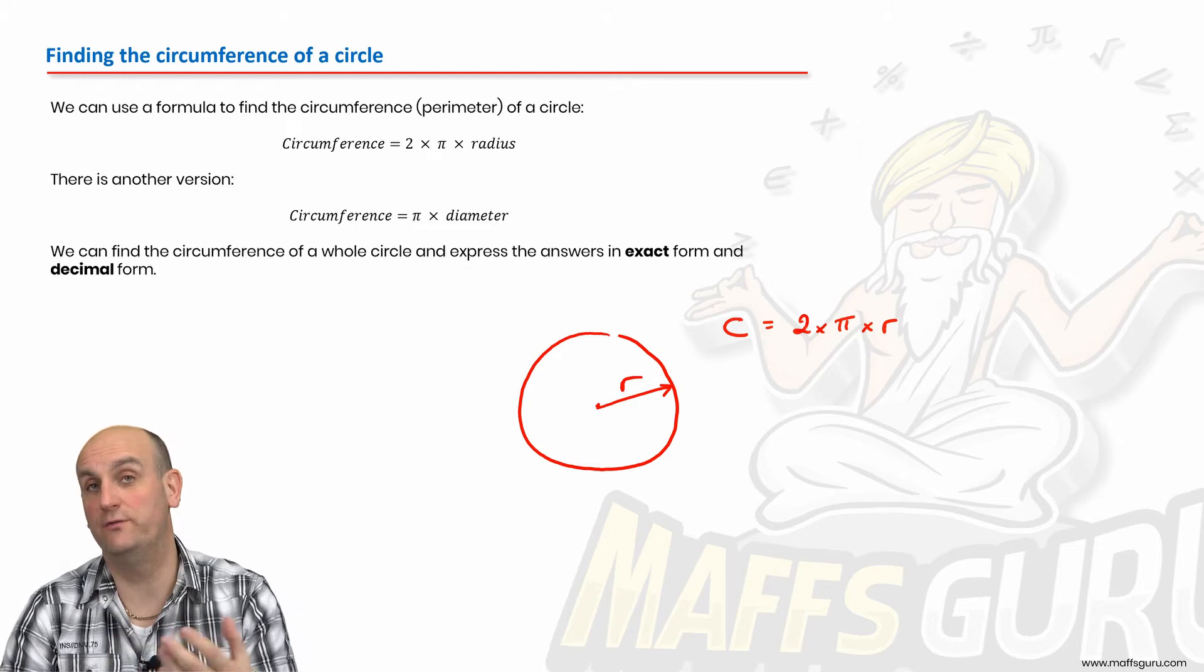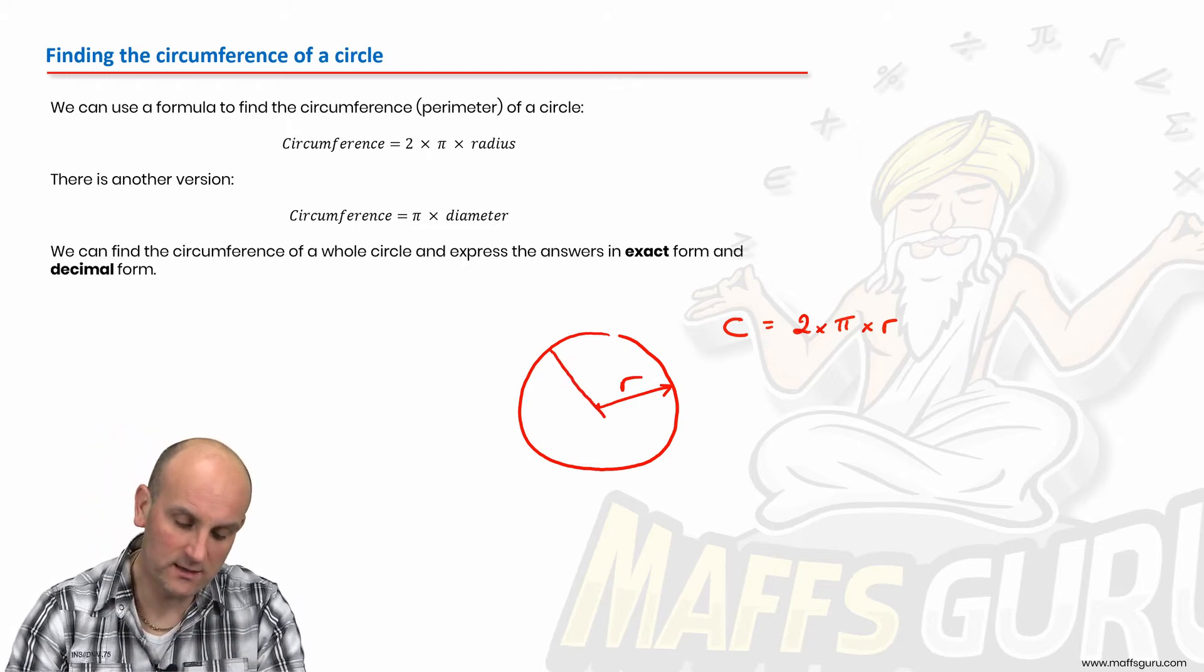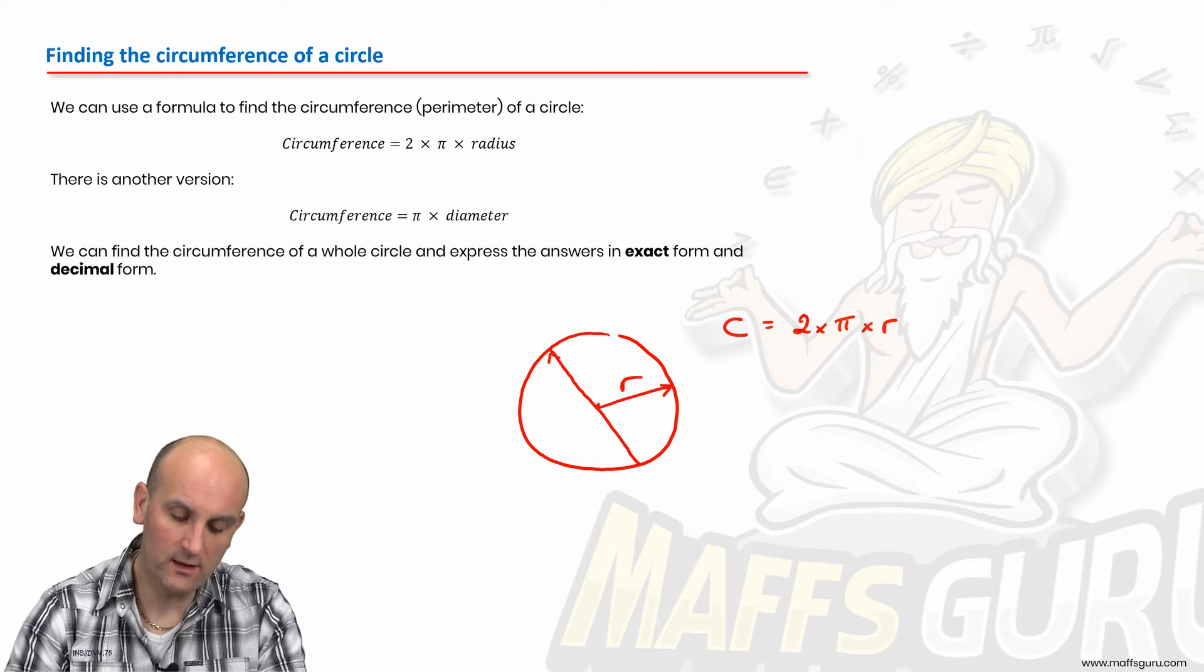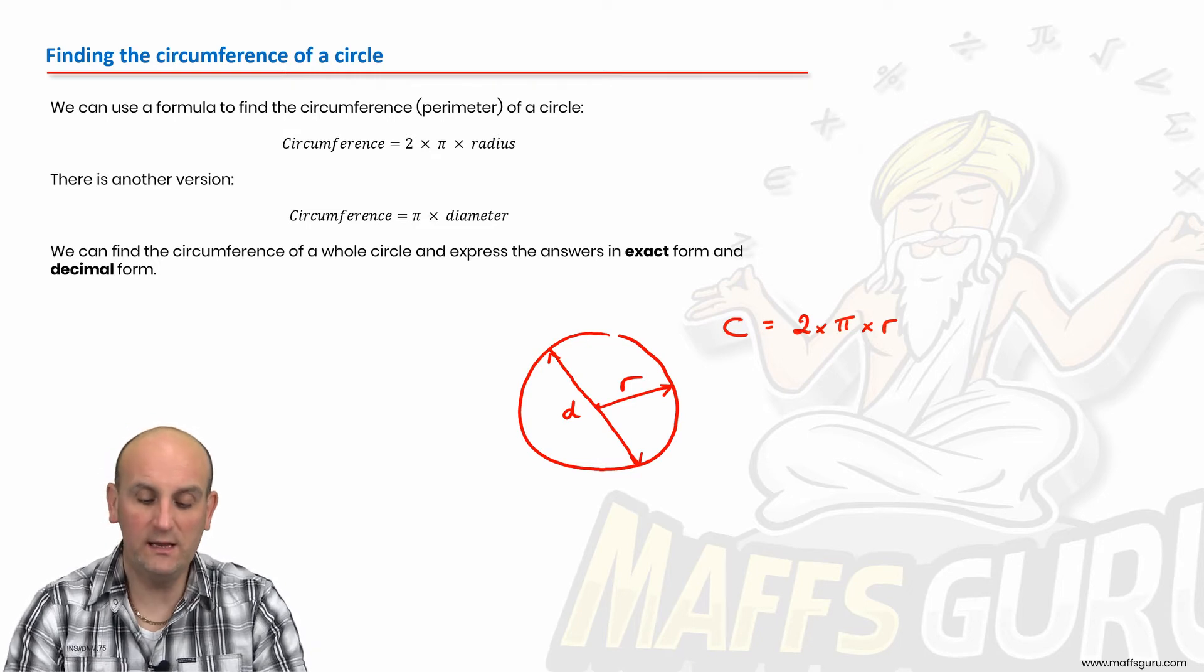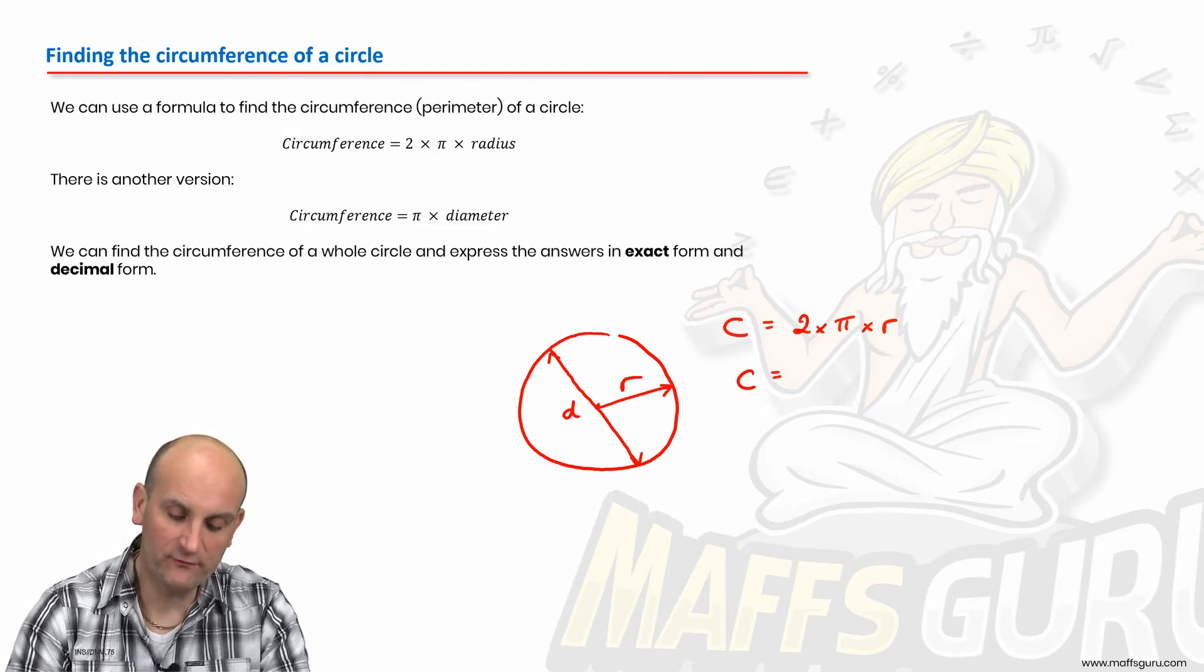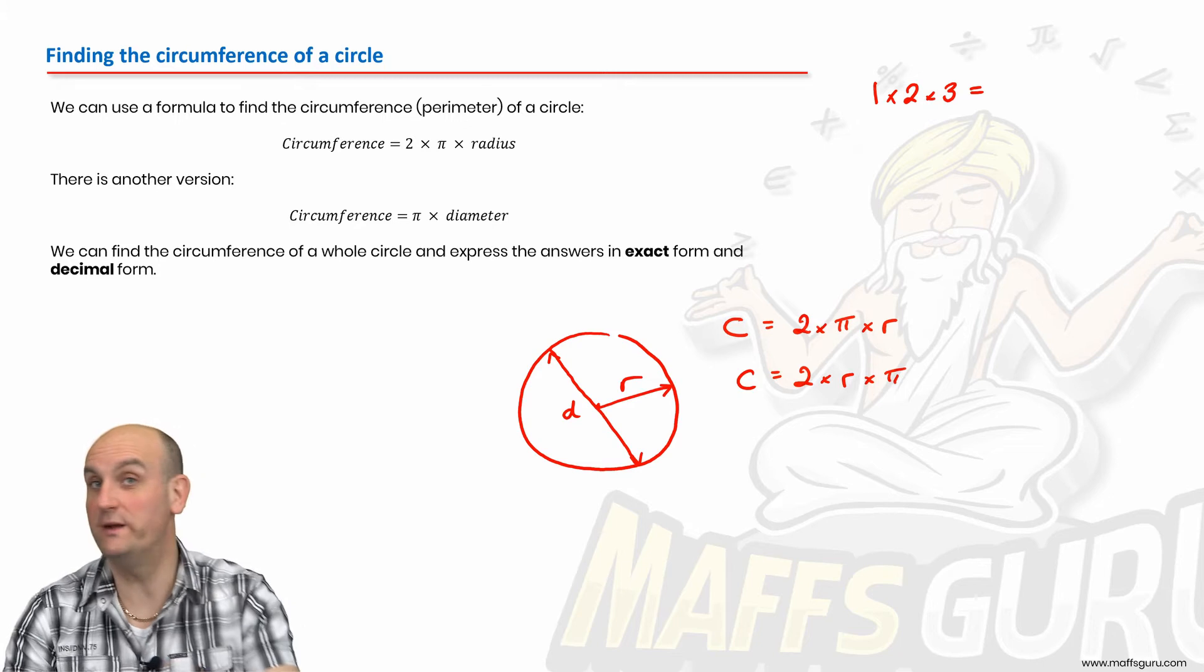Now, they can also give you the diameter. And if you remember, the diameter goes from one side of a circle to the other through the center. It must go through the center. Otherwise, it's known as a chord. Now, we know that we can actually rewrite this formula as two times r times pi. Now, why? Because what's one times two times three? Waiting? Six.